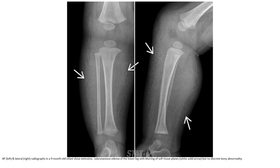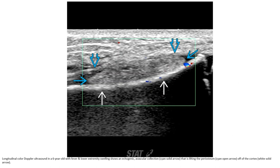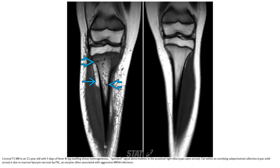AP and lateral radiographs in an infant show extensive subcutaneous edema of the lower extremity with soft tissue swelling but no discrete bony abnormality. Ultrasound image in a six-year-old with fever and lower extremity swelling shows an anechoic avascular collection lifting the periosteum from the cortex. T1 MRI in an 11-year-old with five days of fever and lower extremity swelling shows heterogeneous signal abnormality in the proximal right tibia with fat within the overlying soft tissues.